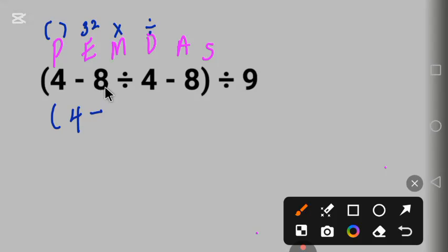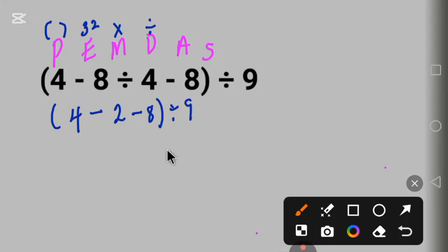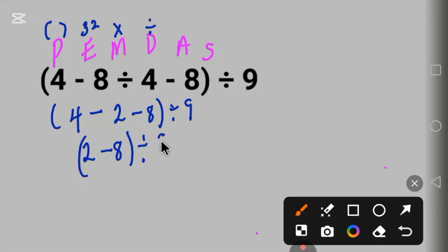4 minus 8 divided by 4: 8 divided by 4 is 2, so we get 4 minus 2 minus 8 parentheses divided by 9. Next is subtraction: 4 minus 2 is 2, giving us 2 minus 8 parentheses divided by 9.